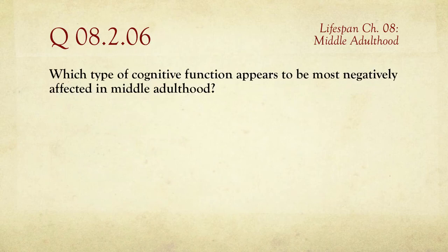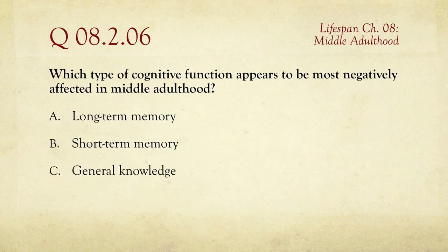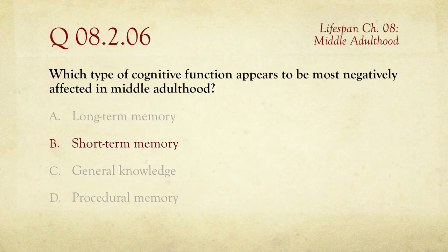Question number six: which type of cognitive function appears to be most negatively affected in middle adulthood? Long-term memory, short-term memory, general knowledge, or procedural knowledge? Procedural knowledge tends to stay pretty stable, and general knowledge doesn't decline very much. Long-term memory is kind of fixed. The answer is short-term memory — the ability to form and quickly recall new recent information shows the biggest decline in middle adulthood.